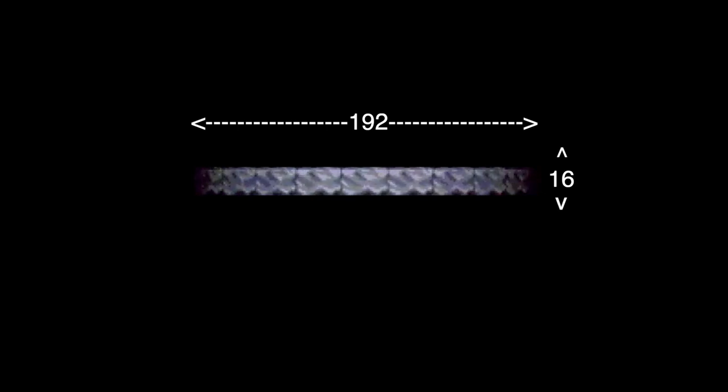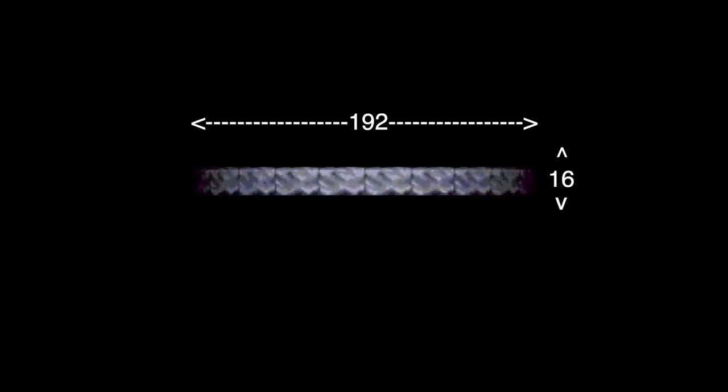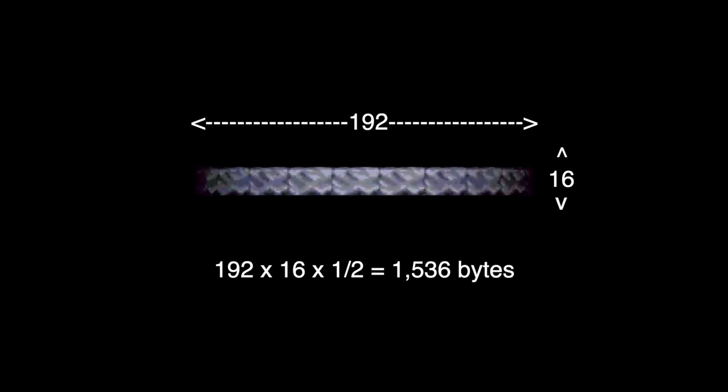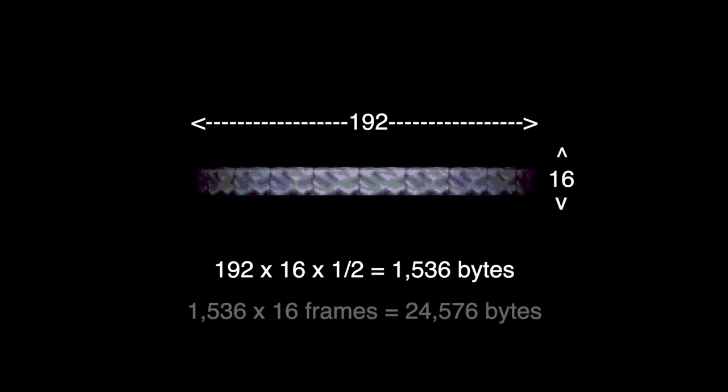So that just leaves this animating strip as the single building block of the whole tower. We can see that it is just 16 frames of animation. This strip is just 192 pixels wide and 16 pixels tall. Given that a pixel costs just half a byte, a single frame of animation is just 1,536 bytes. And so the whole memory footprint for the rotating tower is just 24K.